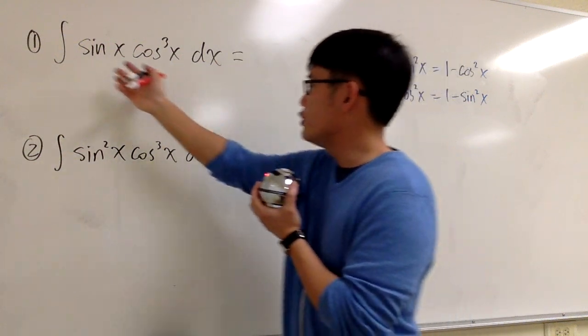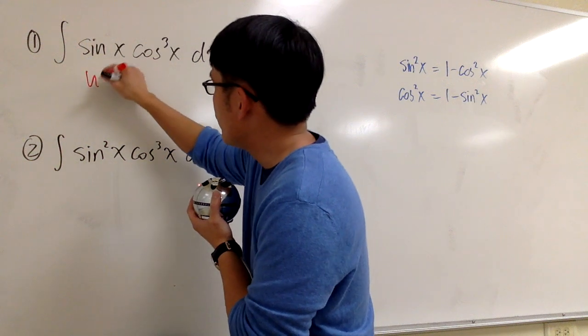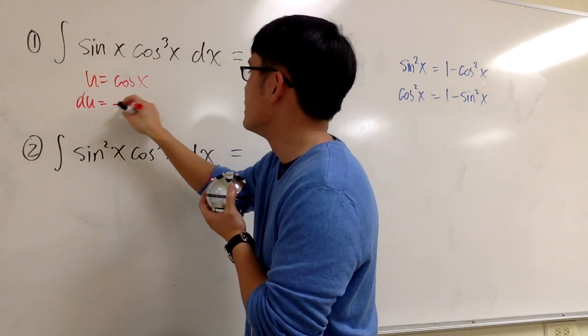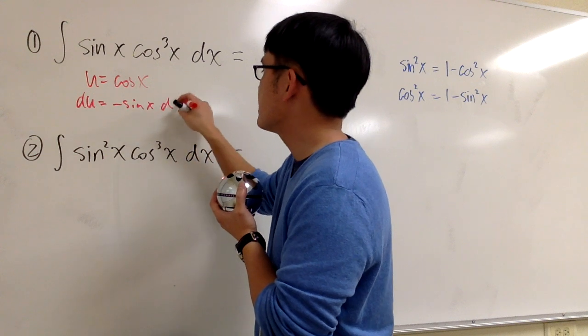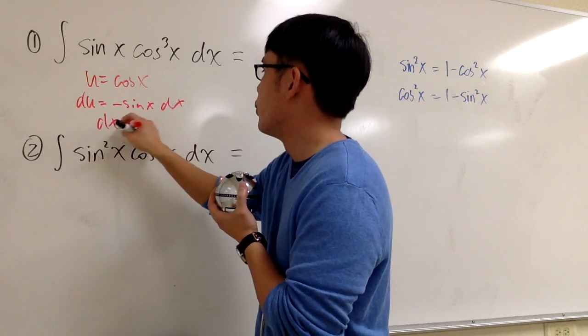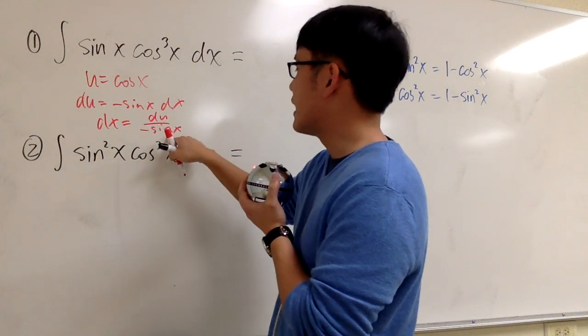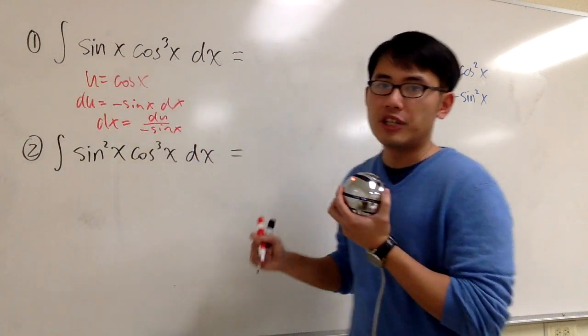First one, because I can just look at this integral and say that u equals cosine x, and then du will be negative sine x dx, and then dx will be du over negative sine x. And then this sine x and that sine x will cancel each other out.